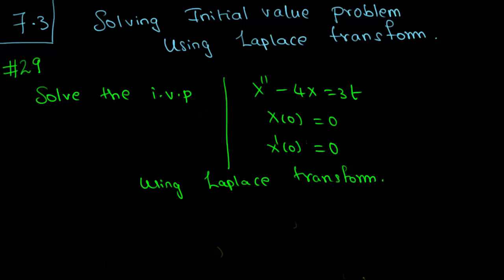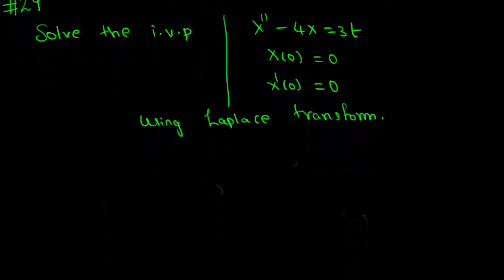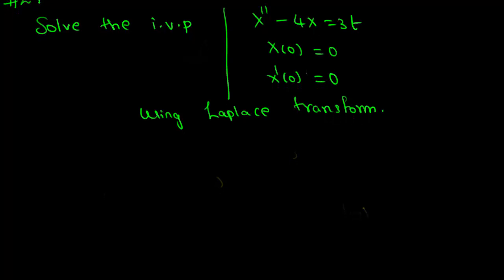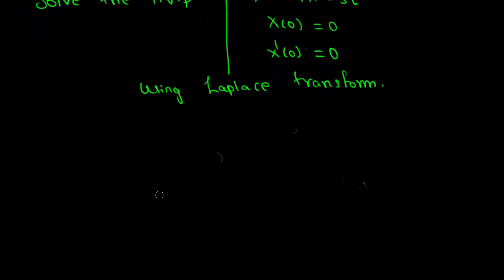Hello class, this is section 7.3. In this video we will solve the initial value problem of a given differential equation using Laplace transform. We are given the differential equation x double prime minus 4x equal to 3t, with the initial conditions x at 0 is 0 and x prime at 0 is 0. Let us say x of t is the solution.